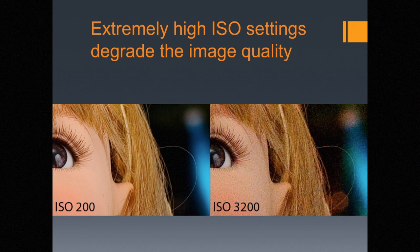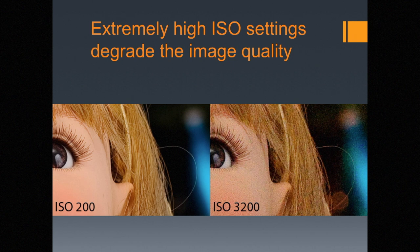What are the drawbacks of high ISO settings? Why not just have it on ISO 3000 all the time? Well, extremely high ISO settings degrade the image quality. In the image on the left, this close-up of a doll face at ISO 200 shows very smooth skin. But on the right at ISO 3200, you get a lot of grain — a lot of noise. That is the equivalent of static: when you don't have good reception on your radio, you turn up the volume and get more static. We want to keep our ISO at a moderate level unless we absolutely need it higher.